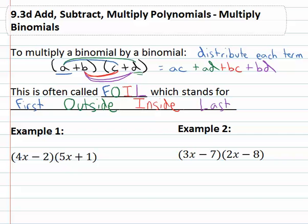So in this example when we see 4X minus 2 times 5X plus 1, that means we're going to start by multiplying the 4X through. 4X times 5X is 20X squared, 4X times 1 is just 4X, and then we come back and multiply the second term, the negative 2, through the next parenthesis. Negative 2 times 5X is negative 10X, and finally negative 2 times 1 is negative 2.